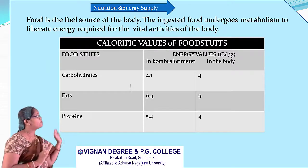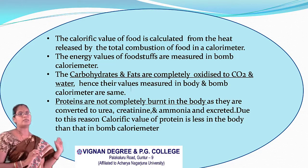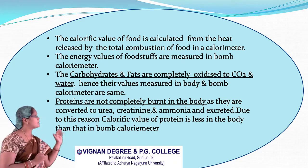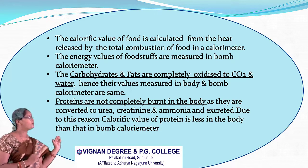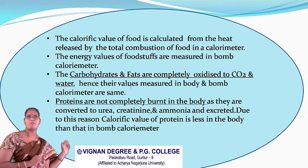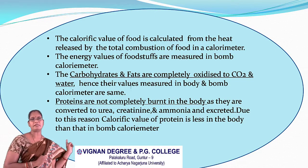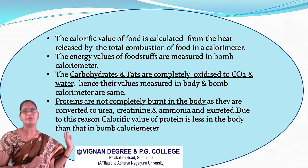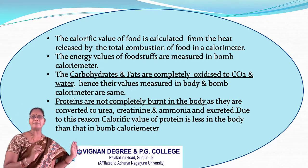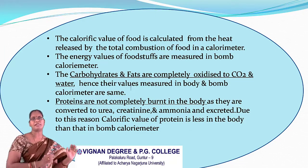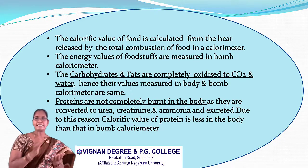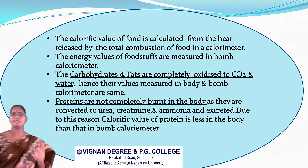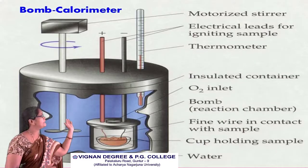Now we will see how the calorific value of food is determined. The calorific value is the amount of energy liberated by 1 gram of a nutrient on complete combustion or complete oxidation. This amount of heat is measured using the bomb calorimeter. The bomb calorimeter is the instrument used to measure the amount of heat liberated by foodstuffs. The name itself indicates: 'calorie meter' — an instrument that measures calories. The food is placed in a sealed vessel called a bomb, hence the instrument is named the bomb calorimeter.